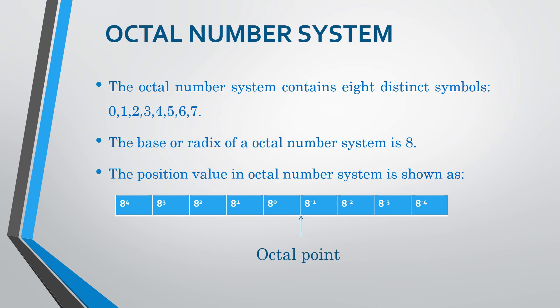Octal Number System mein 8 symbols hain from 0 to 7. Here symbols are 8, so base value will be 8. Position value is like this — this is our octal point. Fraction part position value increases in 8's negative powers, and integer part position value increases in 8's positive powers.